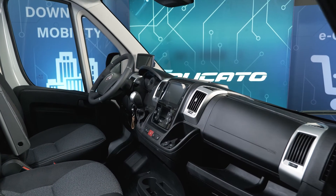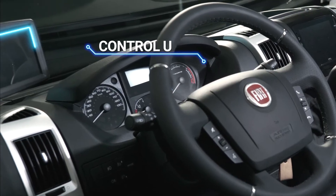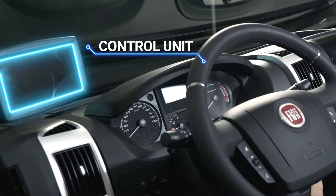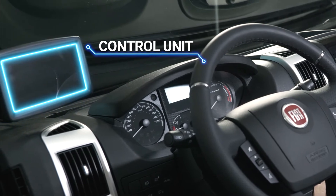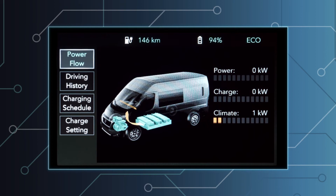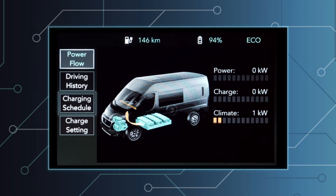The eDucato is equipped with a control unit completely dedicated to electric driving functions. It provides a full set of information and functions for the electric driving experience. Four macro areas can be accessed from the menu always visible on the left: power flow, driving history, charging schedule, and charge setting.